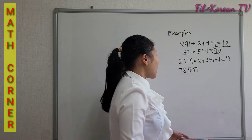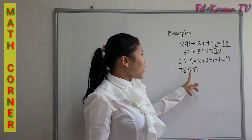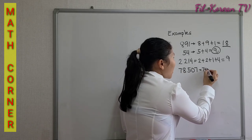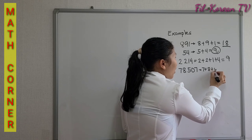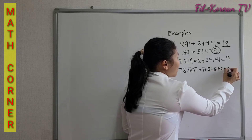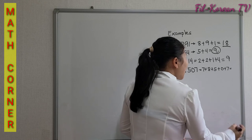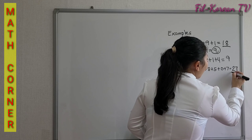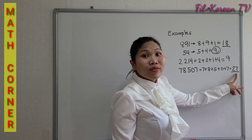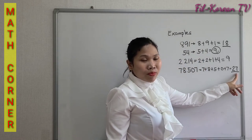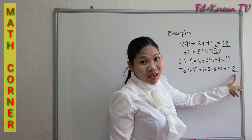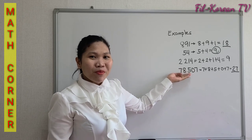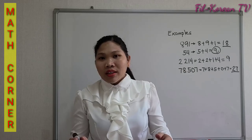78,507. Add the digits: 7 plus 8 plus 5 plus 0 plus 7, the answer is 27. 27 is a multiple of 9 because 9 times 3 equals 27, so this number is divisible by 9.